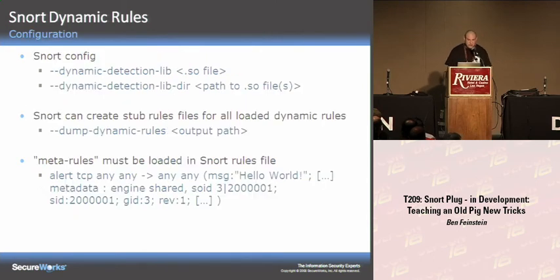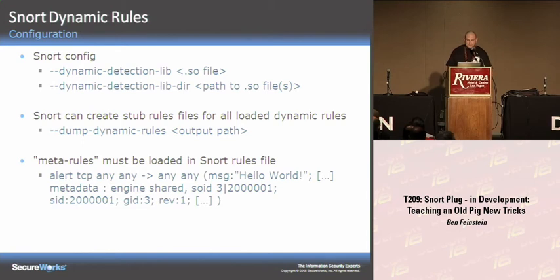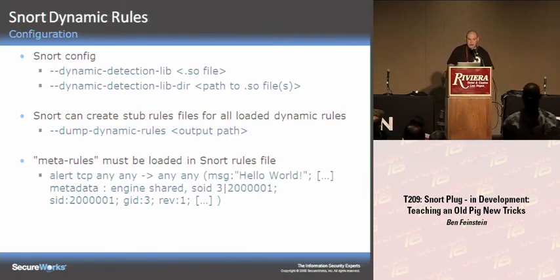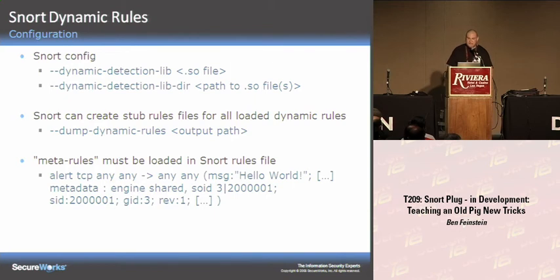To get Snort to load your shared objects, there are command line and configuration options to be aware of. You have dynamic-detection-lib and dynamic-detection-lib-dir — the first points to a specific shared object file, the second to a directory of dynamic rule shared objects. Snort also has a new command line option called dump-dynamic-rules. All dynamic rules require stubbed or dummy meta-rules in the rules files, and this option will dump all that information out for you in a nice format. The stub rule uses the metadata keyword with engine shared, linked to your SID, and generator ID 3 — the ID assigned to dynamic rules.